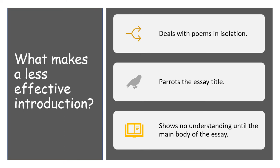We also need to make sure we don't fall into the pitfalls people generally stumble into. What makes a less effective introduction is one that begins by dealing with both poems considering them in isolation. There needs to be an element of comparison from the very start of your essay — not just telling us what poem A does and then what poem B does, but dealing with the two of them together.